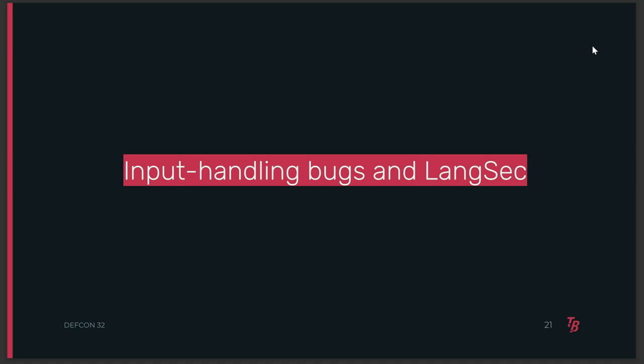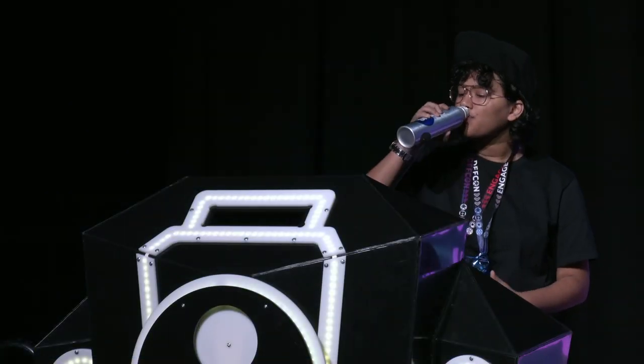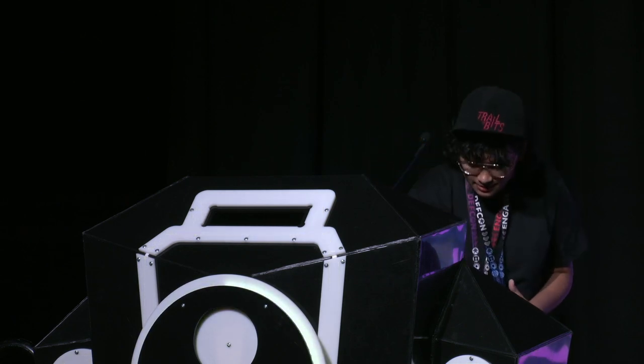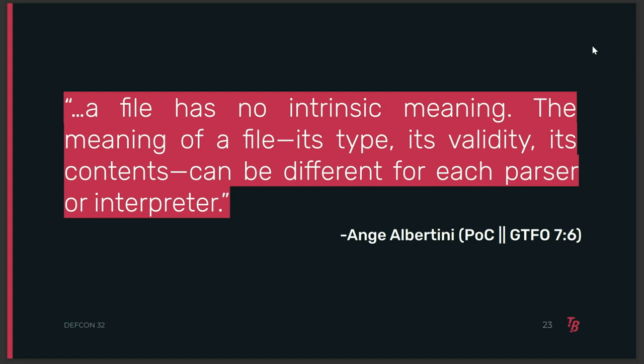Before we talk about exploits, I want to explain a few things about input handling bugs. An ML model is stored as a file. To process these models, you need parsers. Parsing these files into objects and back is deserialization and serialization. Quoting Ange Albertini: a file has no intrinsic meaning. The meaning of a file — its type, its validity, its contents — can be different for each parser or interpreter. This is the reason we can make potentially malicious file artifacts like polyglots and ambiguous files, which I'll talk more about later.